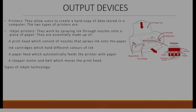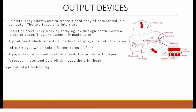Welcome back to the IGCSE Computer Science Code 0478 guide. This is the continuation of chapter 5, and in this video we will be discussing the various output devices. Make sure to watch the first part if you would like to learn more about input devices. I will also provide the link to the first part in the description box below.